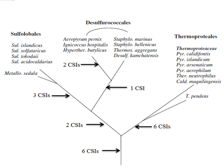Group-specific CSIs are commonly shared by different species belonging to a particular taxon — e.g., genus, family, class, order, phylum — but they are not present in other groups. These CSIs were most likely introduced in an ancestor of the group of species before the members of the taxa diverged. They provide molecular means for distinguishing members of a particular taxon from all other organisms. Figure 1 shows an example of a 5-aa CSI found in all species belonging to taxon X.